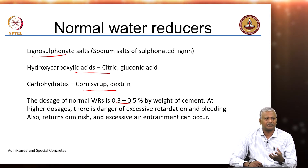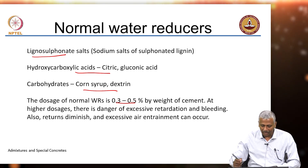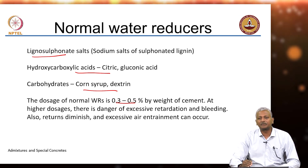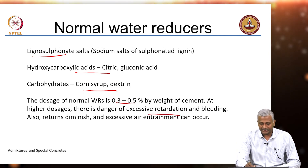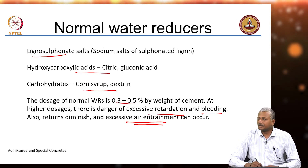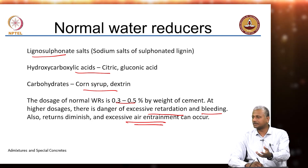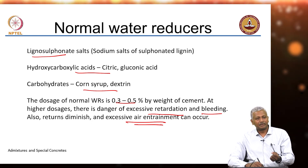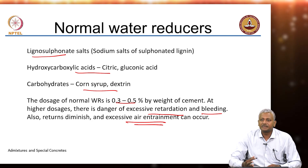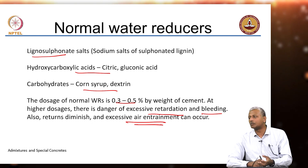Normal water reducers are not really producing concrete that is either extremely workable or extremely low in water content. The problem with excessive usage of this kind of chemical is that it may lead to excessive retardation, bleeding, and also air entrainment. Many of these water-soluble polymers are like surfactants — like a detergent you add to water. If you mix water after adding detergent, you produce air. The same thing can happen with water-reducing chemicals because they lower the surface tension of the water and promote the formation of bubbles.